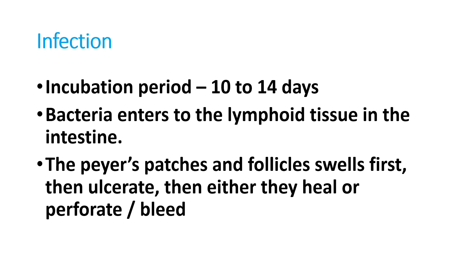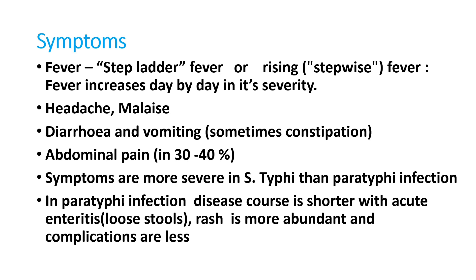Bacteria first enter the lymphoid tissue in the intestine - the Peyer's patches and follicle cells - then ulcerate. Either they heal by natural healing process, or the intestine can perforate, leading to peritonitis. Sometimes the patient can develop intestinal bleeding.